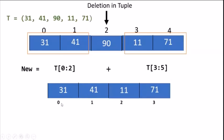31 will be at index 0, 41 will be at index 1, 11 is at index 2, and 71 is at index 3. So the new tuple becomes the new tuple which will not have the value at index 2.